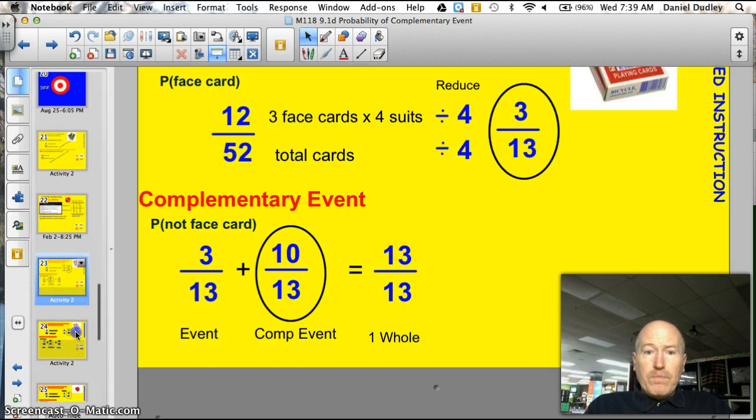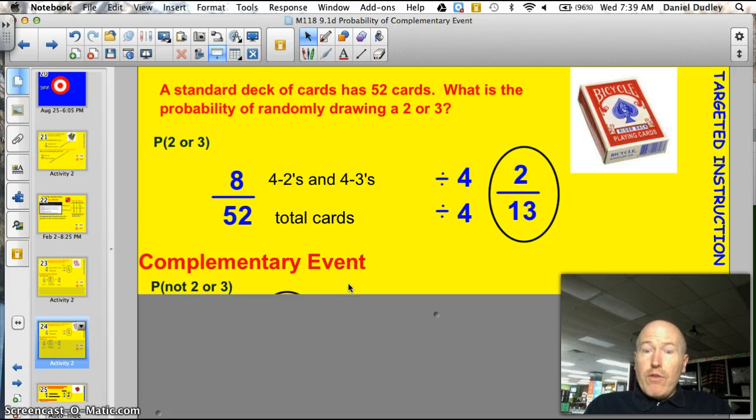Alright, time for you to get involved in this lesson. Alright, I'll work through the event and I'll have you figure out the complementary event. We're back to the standard deck of cards. What's the probability of randomly drawing a 2 or a 3? Okay, so here's what we're looking for. The probability of a 2 or a 3. Well, there are 4 2's and 4 3's. We all know that. So that gives me 8/52. That's my probability of drawing a 4 or a 3. Now if I reduce that down to get the number a little more manageable, if I divide each by 4, I've got 2/13 chance of drawing a 2 or a 3. You figure out what the complementary event is. So you're figuring out the probability that it's not a 2 or a 3. Go ahead.